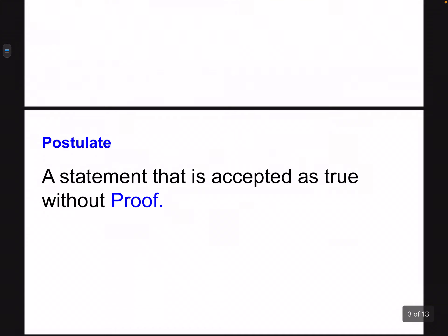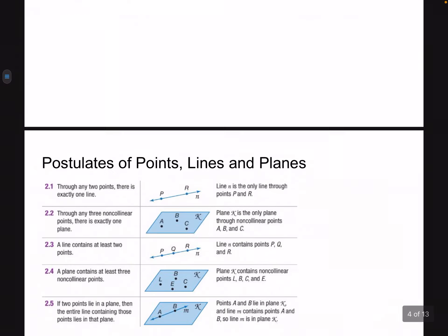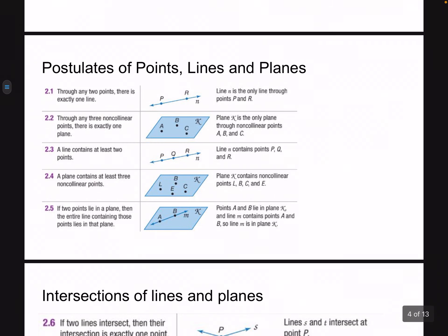A postulate is simply a statement that is accepted as true between people without proof. It's like a starting agreement that we would accept as true — usually something that we can observe very easily. So let's look at a couple of postulates for points, lines, and planes. We're going to be using these postulates today to do some basic proofs.